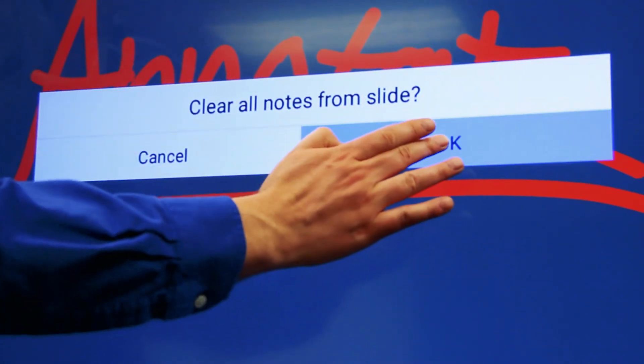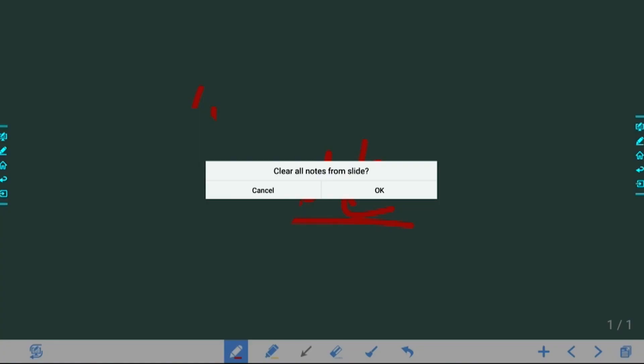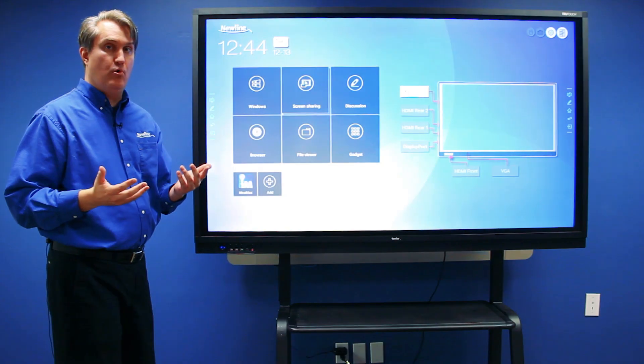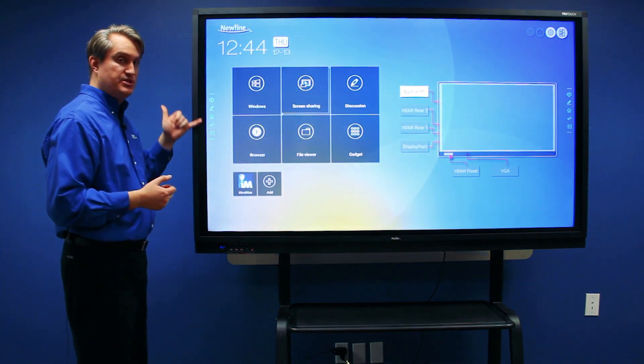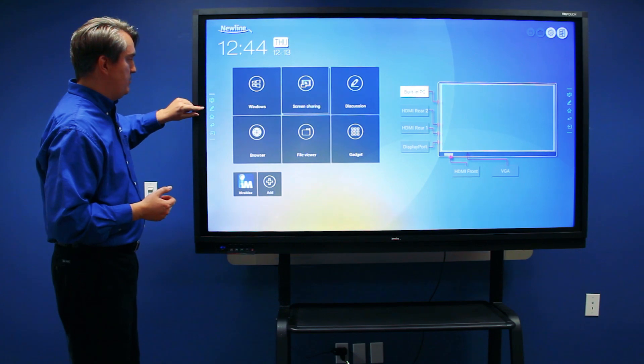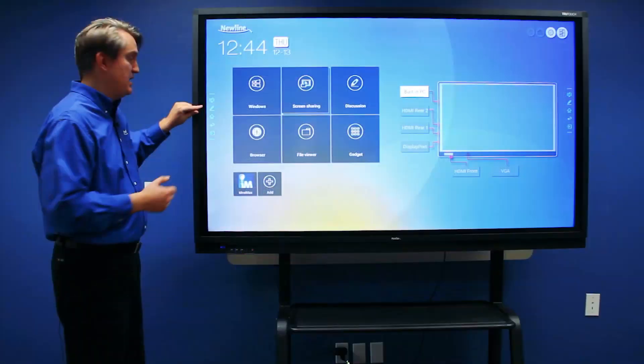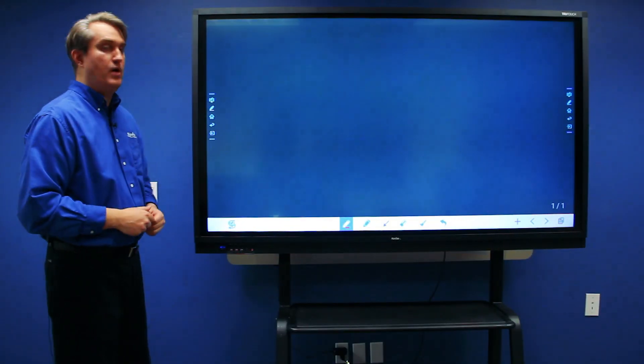Another way to access the whiteboard from the home screen is using the side toolbar. The second button, which looks like a pen coming down on a piece of paper, gets you access to the whiteboard as well.